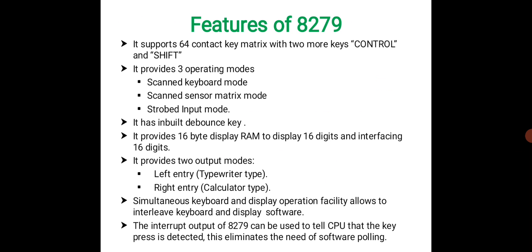It provides 16-byte display RAM to display 16 digits, and you can also interface 16 digits. It provides two output modes: left entry mode and right entry mode. Simultaneous keyboard and display operation allows interleaving keyboard and display software. The interrupt output of 8279 can tell the CPU that a keypress is detected, eliminating any need for software polling.